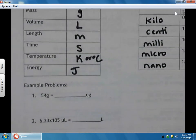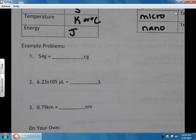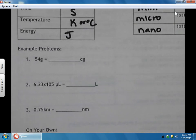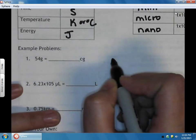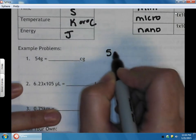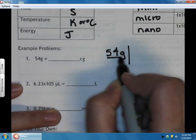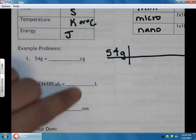Many of you probably have learned multiple methods on how to convert. Today we're going to learn a method called the factor label method. In doing the factor label method, we look at our units and we always follow our units. We always start with what we're given. So we're given 54 grams.